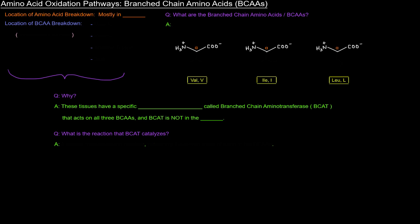Next up, we're going to talk about the oxidation or breakdown of branched-chain amino acids. Up until now, the location of amino acid breakdown has pretty much almost entirely been in the liver. But with branched-chain amino acids, the location of their breakdown is in the muscle, kidney, adipose tissue, and brain. Basically, all the extra-hepatic tissues.